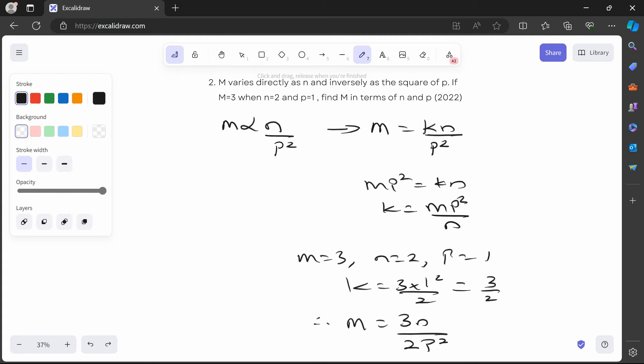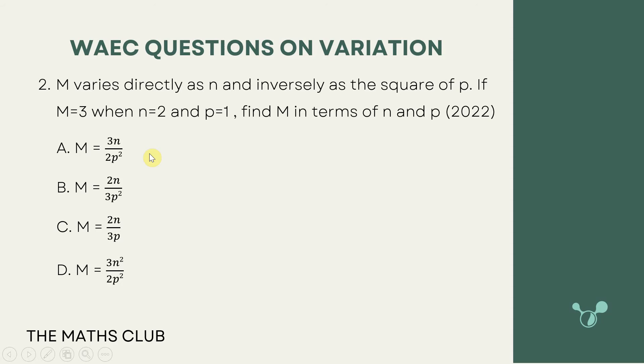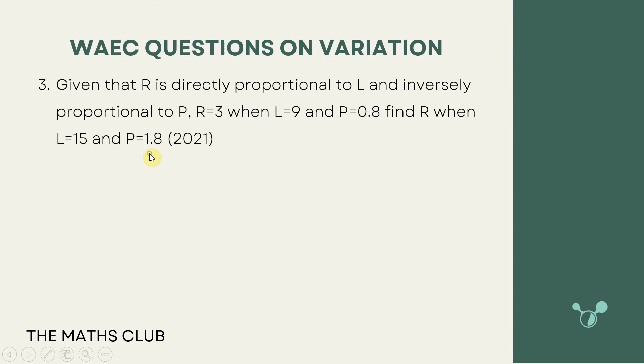That is the formula for m in terms of n and p. Let's check — that should be option A. Great. Number three says: given that r is directly proportional to l and inversely proportional to p, r is equal to 3 when l is equal to 9 and p is equal to 0.8. Find r when l is equal to 15 and p is equal to 1.8. Pause the video and try it out yourself.